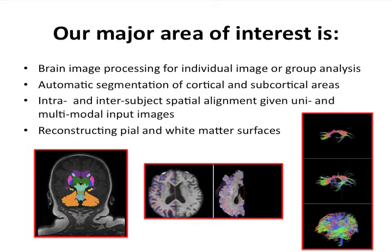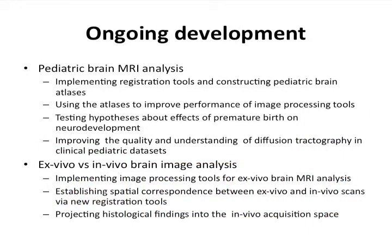These images that I'm showing are the output of some of our tools. Here on the left, this is a segmentation or anatomical labeling of a particular input structural MRI image. In the middle, you see the spatial alignment between an ex vivo and an in vivo MRI scan of the same subject. And on the right-hand side, you see the output of different tractography algorithms that represent the white matter structure of a neonatal brain.